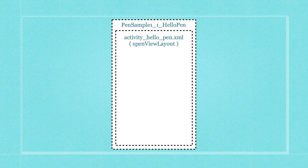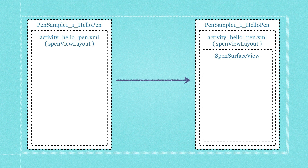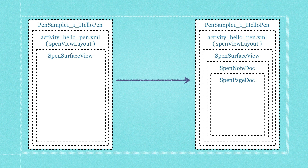Basically all you need to do is have the activity that uses the layout that is defined. Create your activity — in this situation it's the PenSample1-1 HelloPen activity — then define your layout, which is activity_helloPen.xml. Make a reference to the relative layout with ID S-Pen view layout. To that we add the S-Pen SurfaceView, which allows us to draw with the S-Pen or a finger. Then we add the S-Pen NoteDoc, which allows us to add and remove pages. Finally, we add a page of type S-Pen PageDoc, which holds our layers, objects, and any imported images.